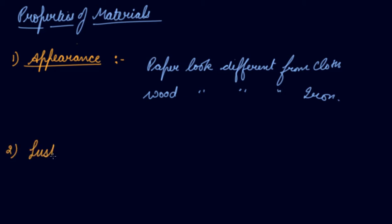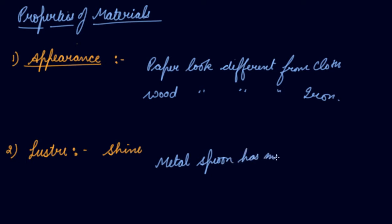Second comes luster. Luster means shine. A metal spoon has more luster than a wooden spoon. Similarly, silk cloth has more shine than wool. Sometimes metals lose their luster when exposed to air and moisture.